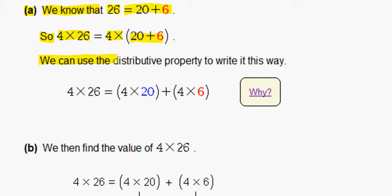We can use the distributive property to write it this way. 4 times 26 is equal to 4 times 20 plus 4 times 6.